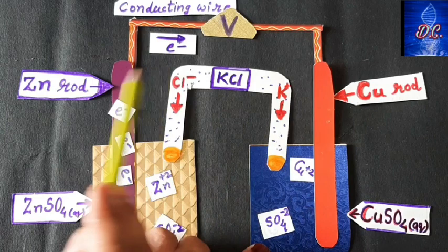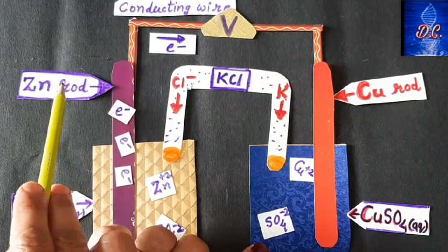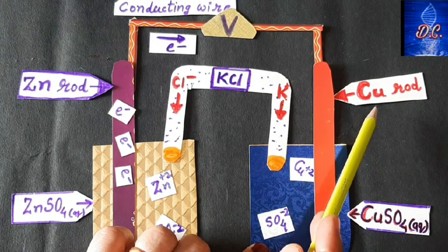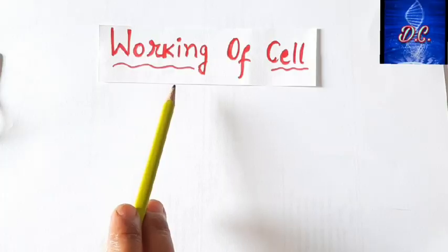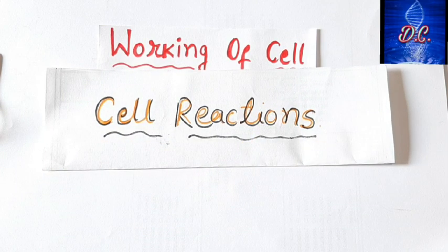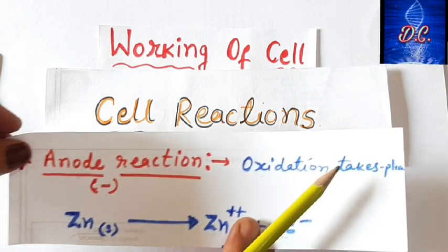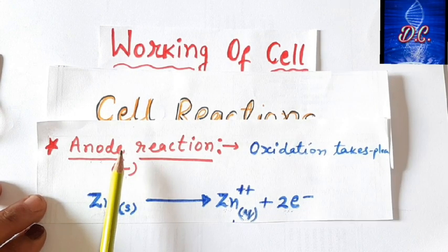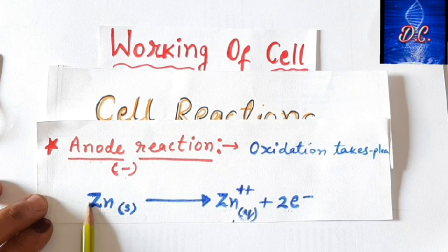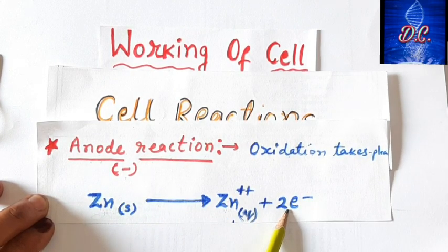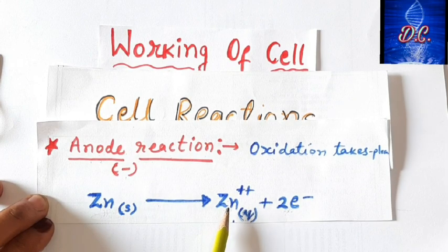So the copper rod acts as the cathode and the zinc rod acts as the anode. The zinc rod is negatively charged because it is rich in electrons, while the cathode (copper rod) is positively charged and electron-deficient. At the anode, zinc atoms are oxidized — each atom loses two electrons, converting to Zn²⁺ ions which transfer into the aqueous solution. The two electrons released during oxidation deposit on the rod, making the zinc rod negatively charged.